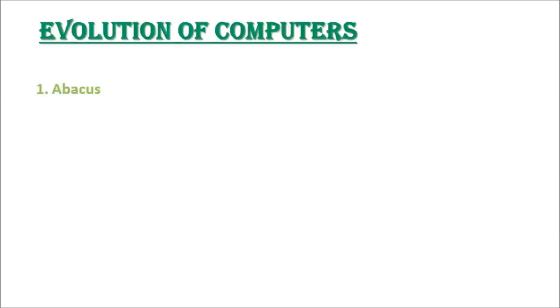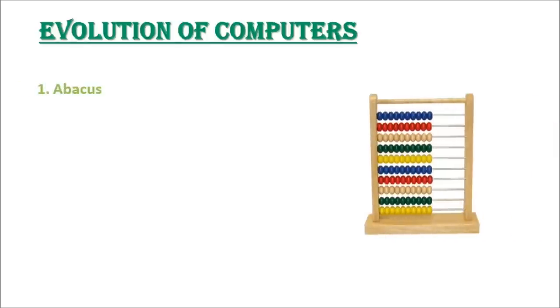Now let us study about evolution of computers. First, Abacus: Around 3000 years before the birth of Jesus Christ, the Mesopotamians discovered the earliest form of an accounting machine with beads and wires which subsequently came to be known as Abacus.